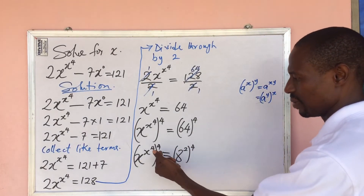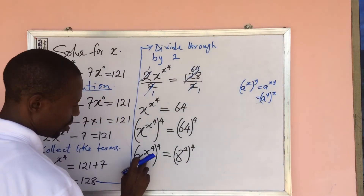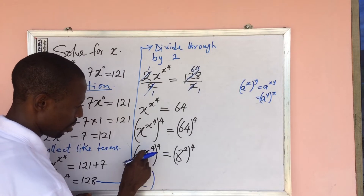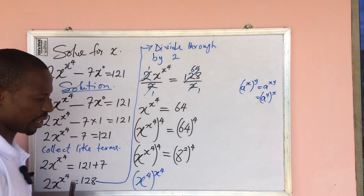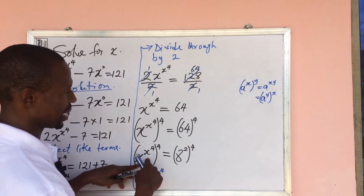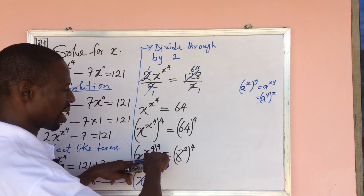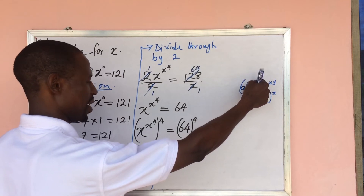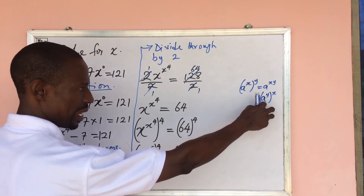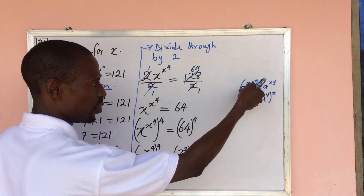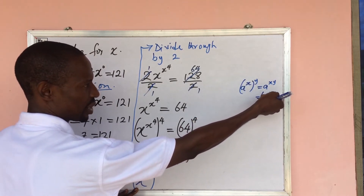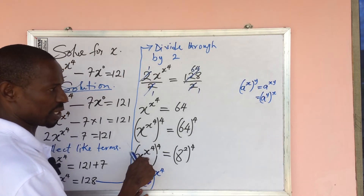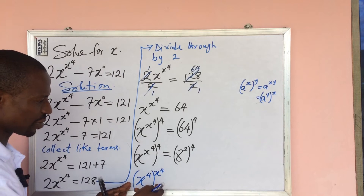So this expression could be rewritten as x to the power of 4, all to the power of x to the power of 4. Here, x is our base 'a', x to the power of 4 is our 'x' exponent, and x to the power of x is our 'y'. So if I interchange, the power that was inside comes out and the one outside goes in. This expression and the original are the same by this law.